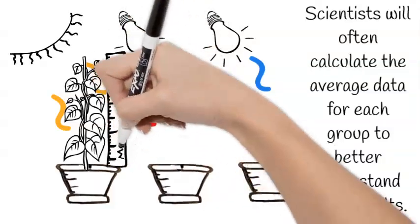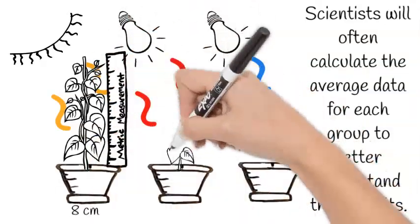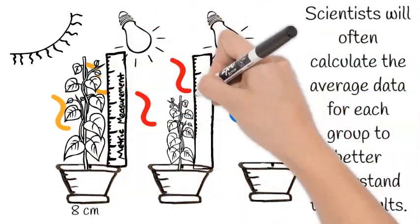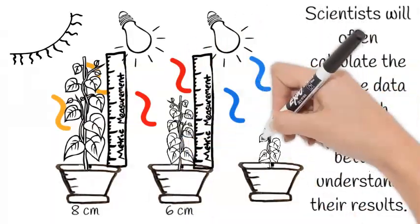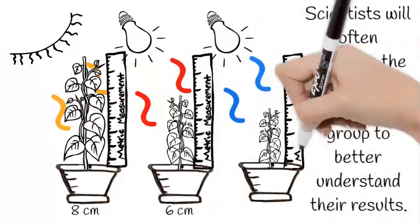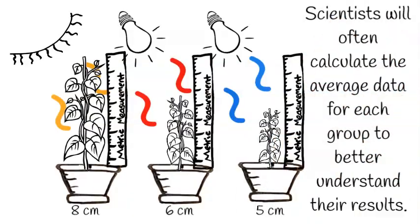For the pea plant growing in natural sunlight, it had an average of eight centimeters growth over three weeks. The plant growing in red light had six centimeters of growth. And the plant growing in blue light had an average of five centimeters of growth.